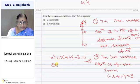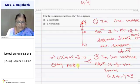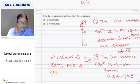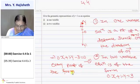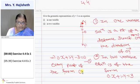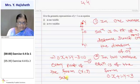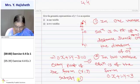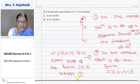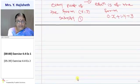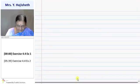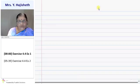So every point of the form (R, 3) satisfies equation number 1 for every value of R.